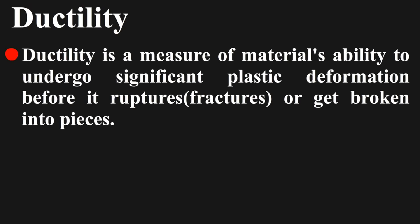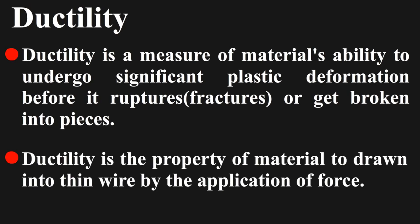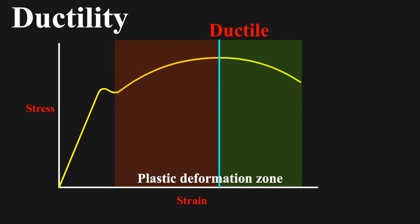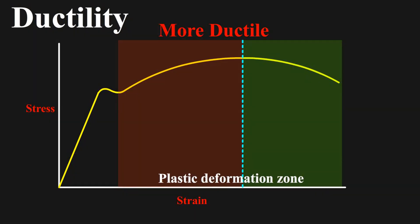Let's come to next property, ductility. Ductility is a measure of material's ability to undergo significant plastic deformation before it ruptures, means fractures or get broken into pieces. Also, there is one more definition of ductility which is, ductility is the property of material to get drawn into thin wires by application of force. All this basically means, this curve of plastic deformation should be long on horizontal axis. Longer the curve, more the material is said to be ductile.